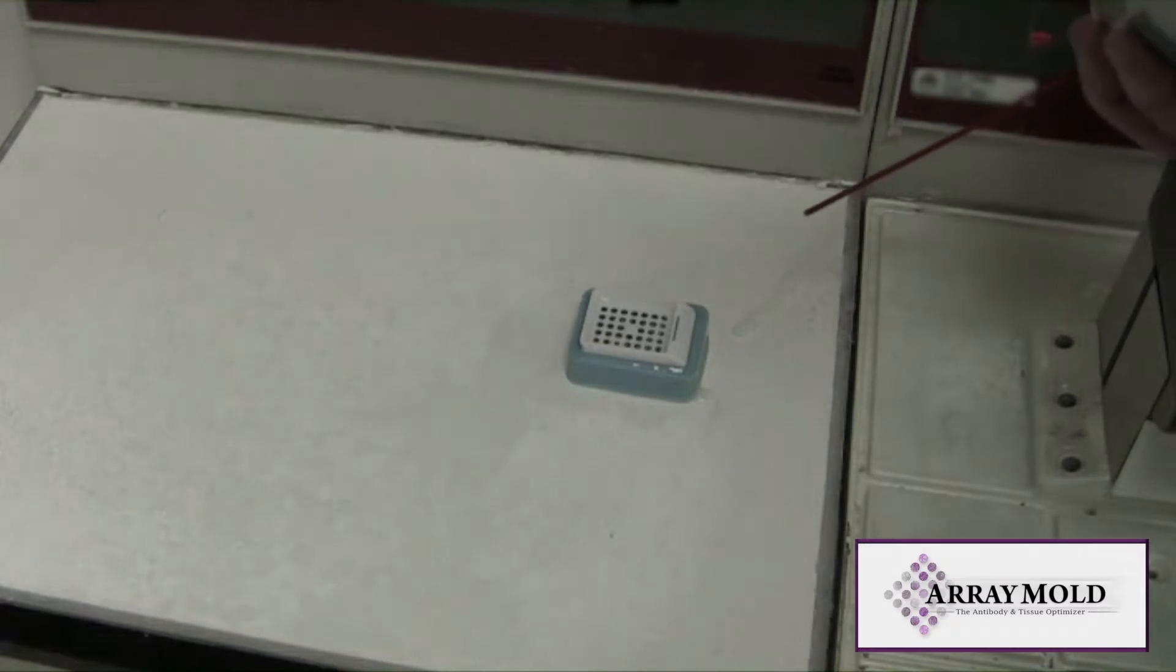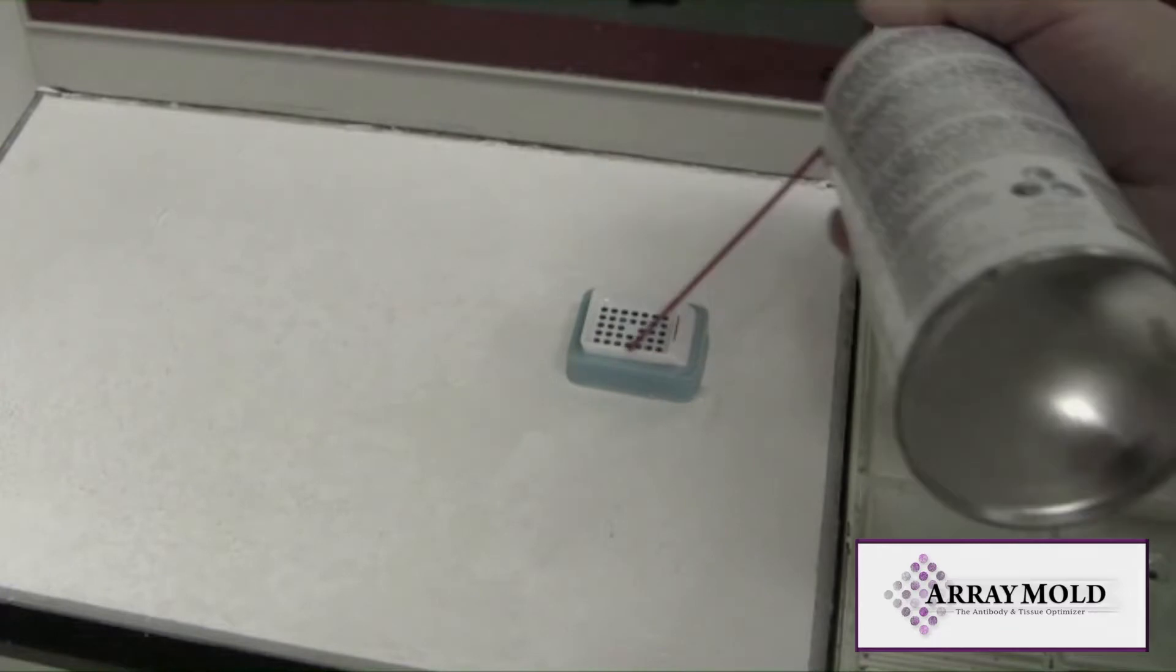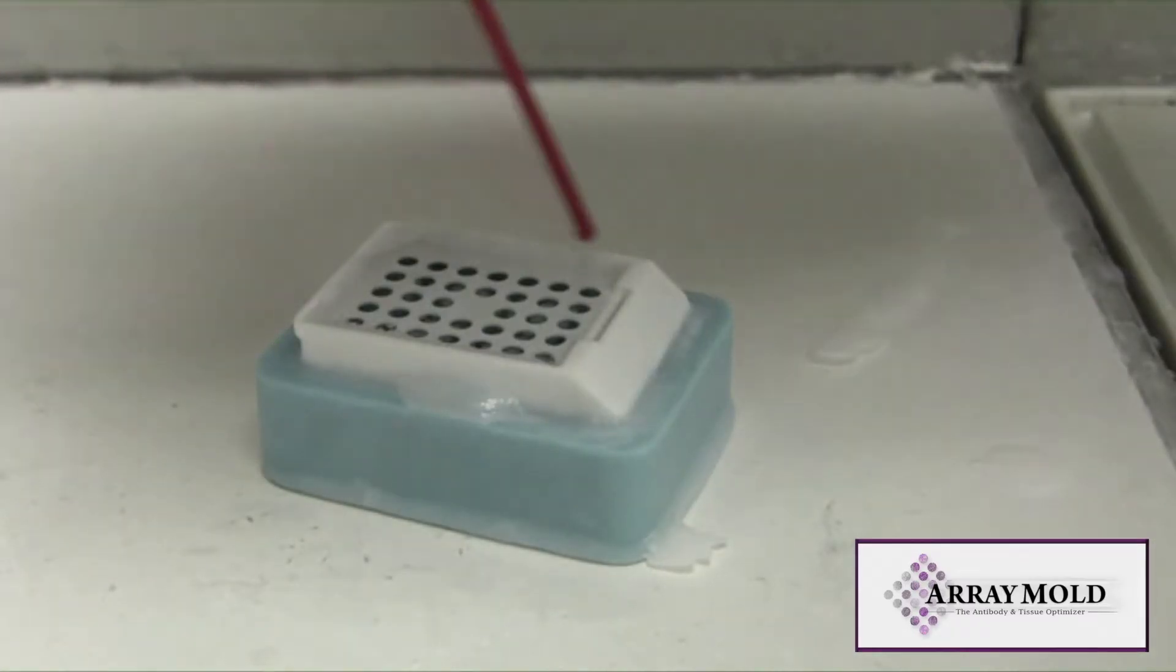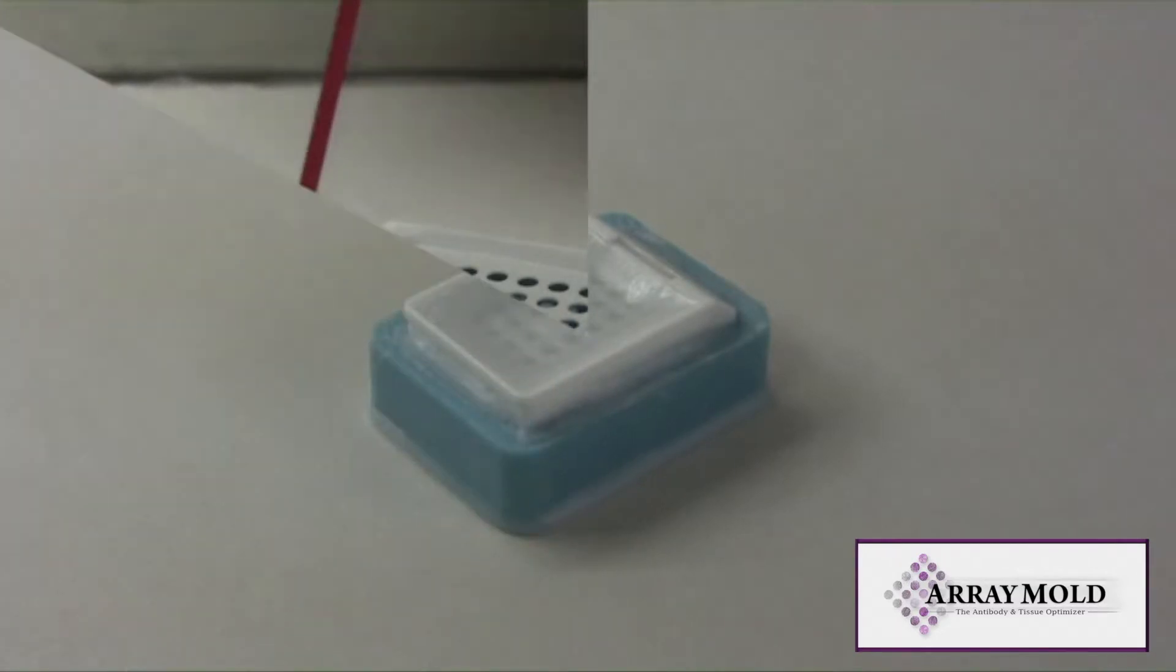I'm using freeze spray here around the cassette. This creates a paraffin seal so that the paraffin doesn't drip out because you need to fill the cassette to the top and this will give you a good solid block for making your tissue microarray.